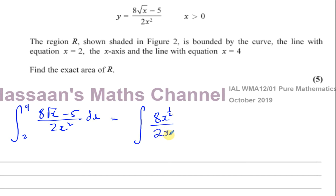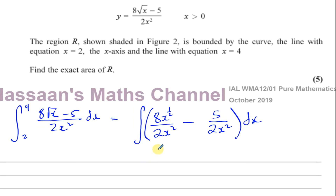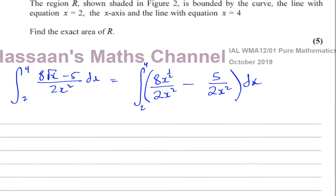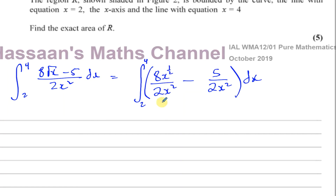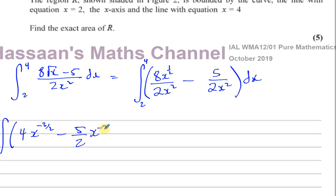We write the expression as 8x to the power of a half over 2x squared, minus 5 over 2x squared, to be integrated with respect to x. Combining the x terms: the 8 and 2 cancel to give 4, and the power becomes a half minus 2, which equals minus 3 over 2. The second term becomes minus 5 over 2 times x to the power of minus a half.